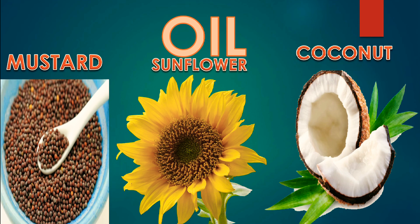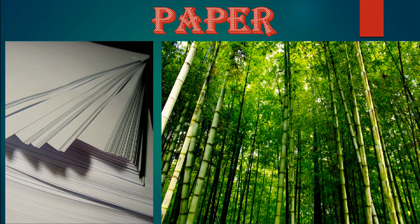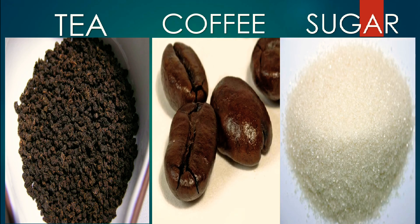Plants like rubber trees give out a juice. This juice is collected and turned into rubber. From it, we make tires, tubes and erasers. We get gum from plants. We prepare papers from bamboo trees. Plants are useful in the preparation of tea, coffee and sugar. We get tea powder from the leaves of the tea plant. We get coffee powder from the seeds of the coffee plant. We get sugar from the juice of sugarcane stem.